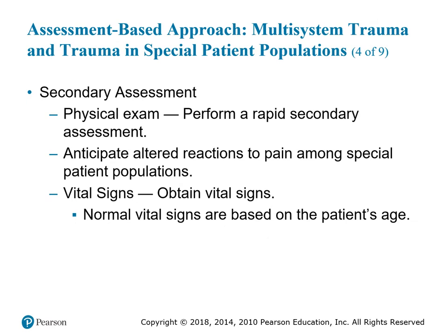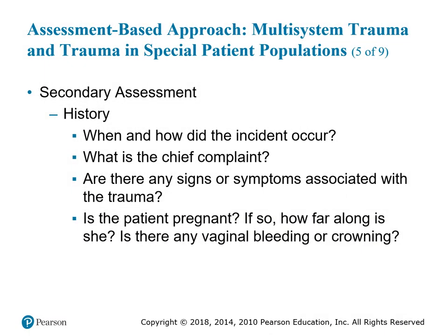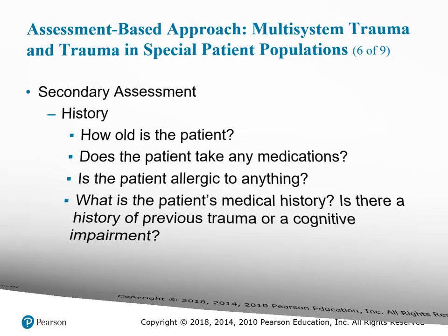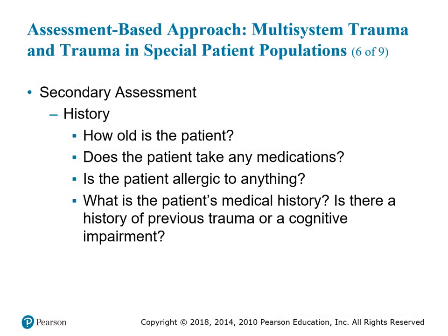Assessment — physical exam: perform a rapid secondary assessment. Anticipate altered reactions to pain among special patient populations. Normal vital signs are based on the patient's age group. History questions include: When and how did the incident occur? What is the chief complaint? Are there signs and symptoms associated with trauma? Is the patient pregnant, and if so, how far along? Is there vaginal bleeding or crowning? How old is the patient? Does the patient take medications? Is the patient allergic to anything? What is the patient's medical history? Is there a history of previous trauma or cognitive impairment?